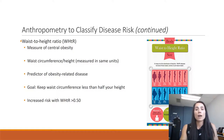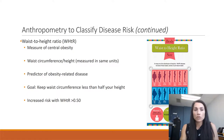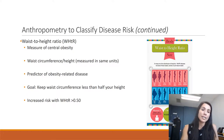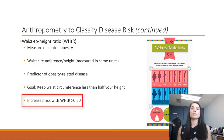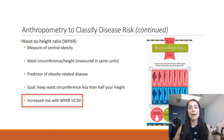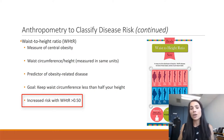Waist-to-height ratio — now it's not just waist to hip, it's waist to height. It's a good measure of central obesity. You take your waist circumference and divide by your height, and it's a good predictor of obesity-related diseases. The goal is for your waist circumference to be less than half of your height — so basically if the ratio is anything greater than 0.5, you're at a higher risk.